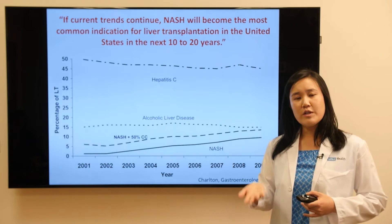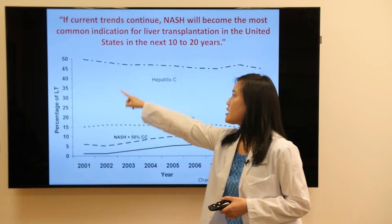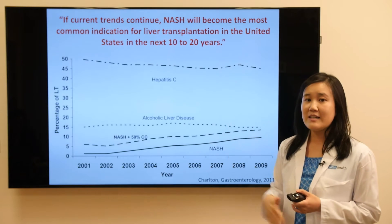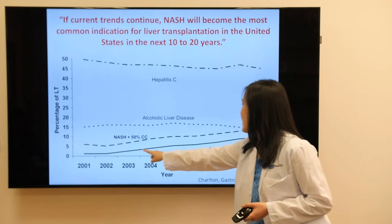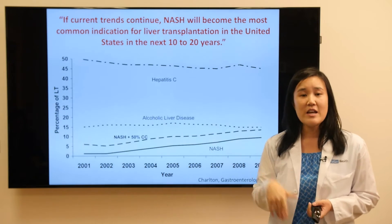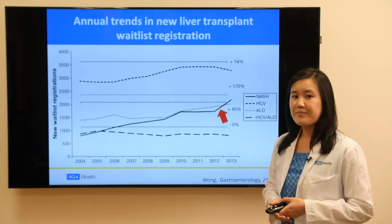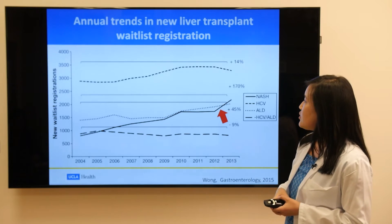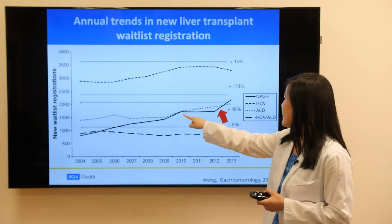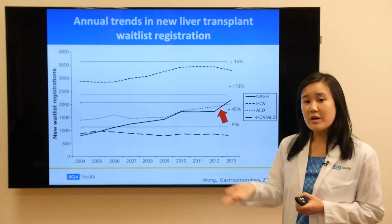Once a patient has cirrhosis, often the only way to help is a liver transplant. Looking at the percentage of liver transplants in the United States, hepatitis C is a main etiology. But there is a sharp incline of NASH patients needing transplants, and this data only goes to 2009. We suspect that over the next 10 to 20 years, if current trends continue, fatty liver will become the most common indication for liver transplant in the United States. More recent data from 2015 confirms this sharp incline from 2011 to present.